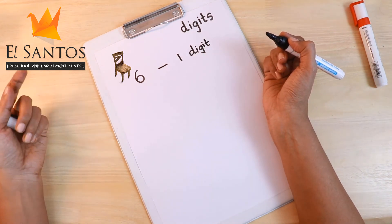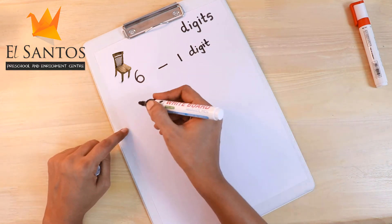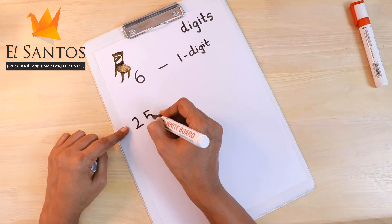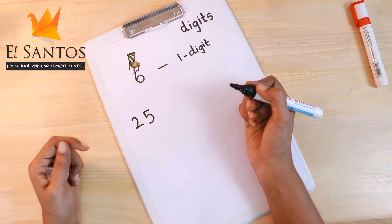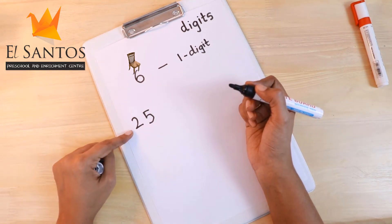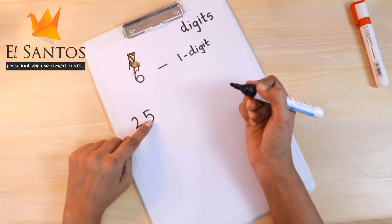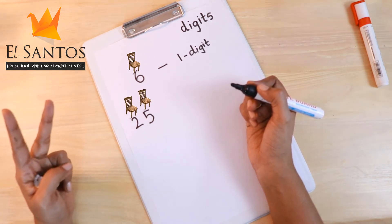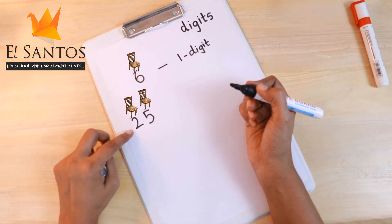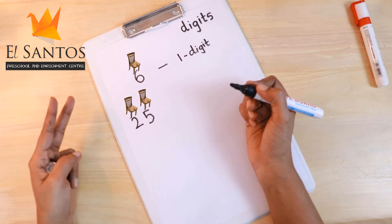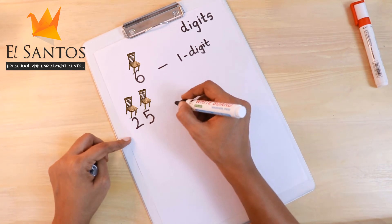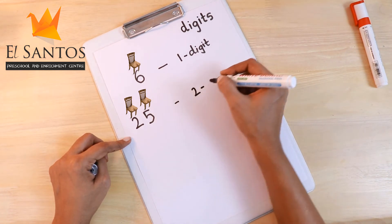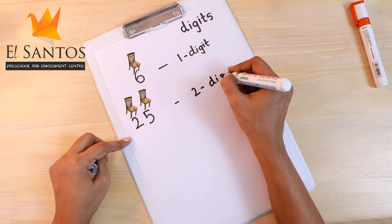If we have a number like this — one, two — that means it needs two places. So a number with two places needs two chairs. So it's called a two digit number.